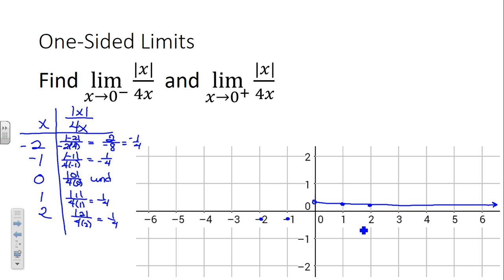And again, we don't get to be zero, but to the left of zero, we're going to be negative 1 fourth. So, the limit as x goes to zero from the left is going to be negative 1 fourth. But the limit as x goes to zero from the right is going to be positive 1 fourth. So far so good? Questions on this one?